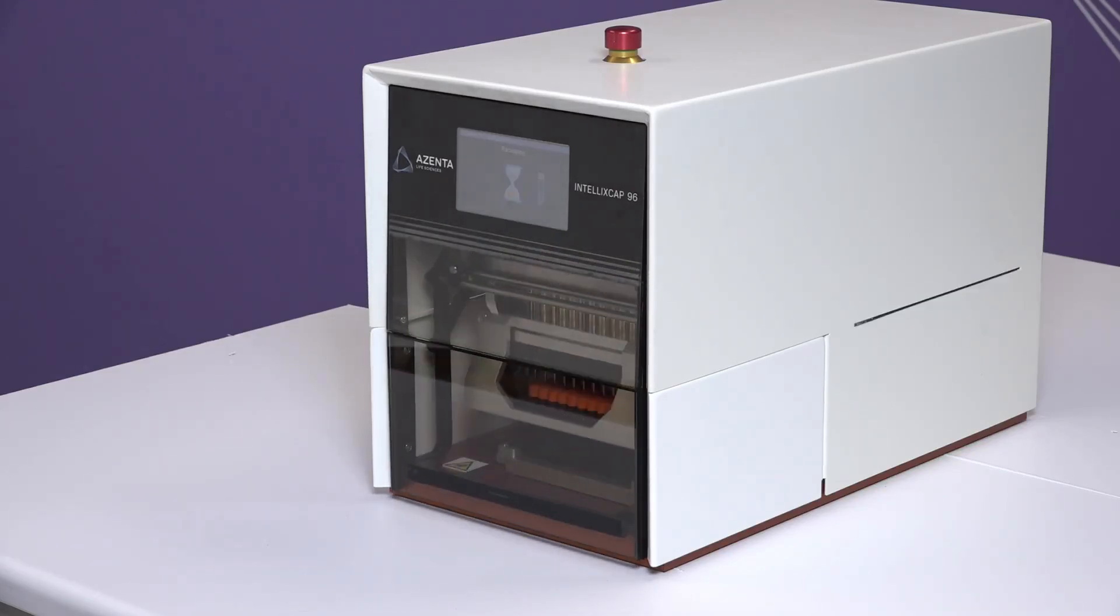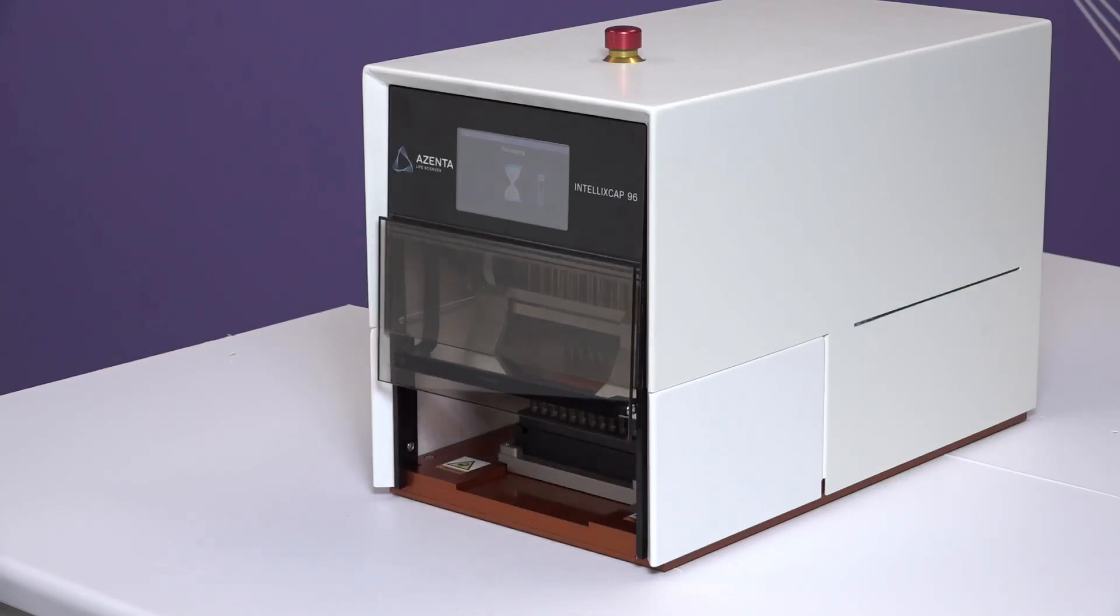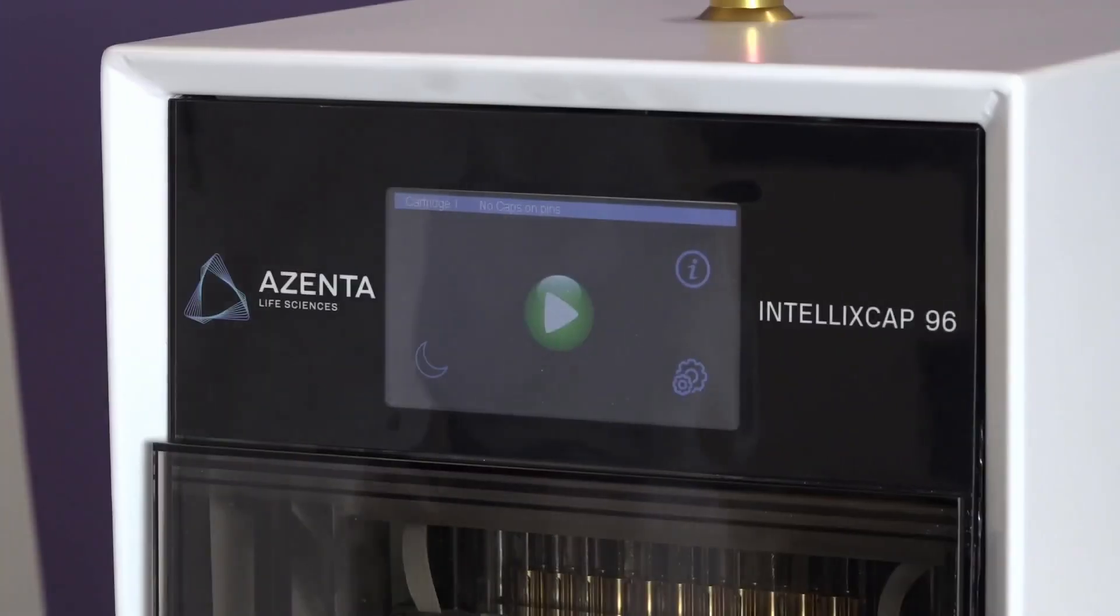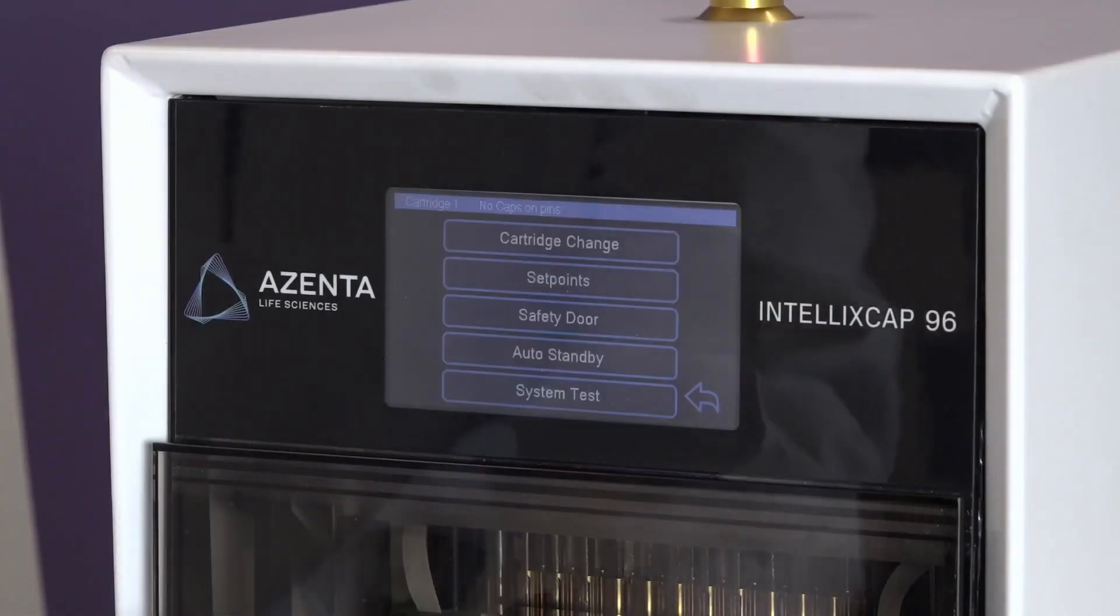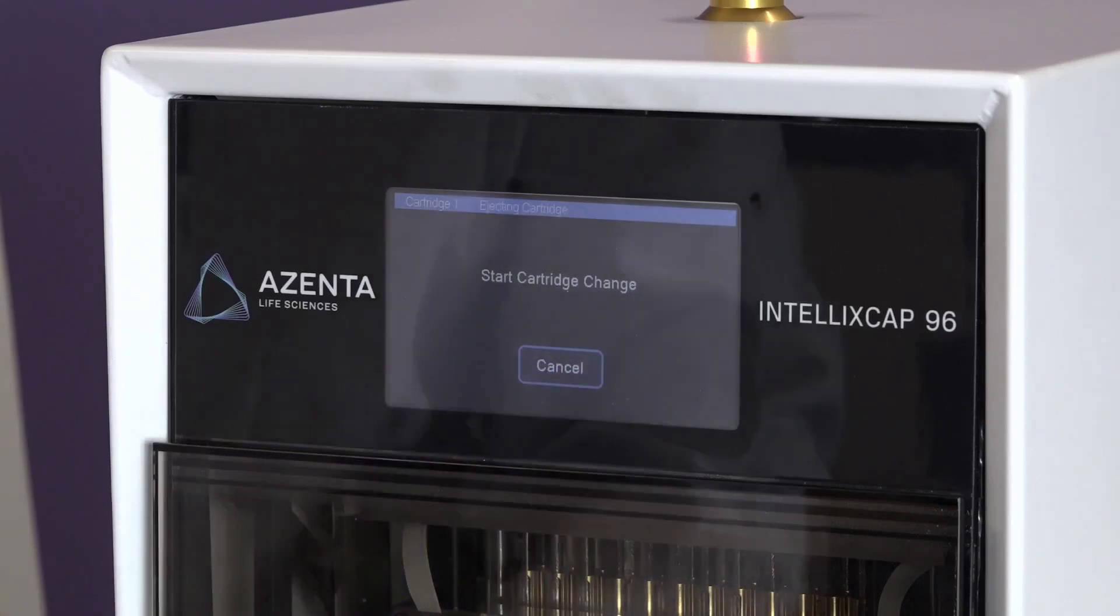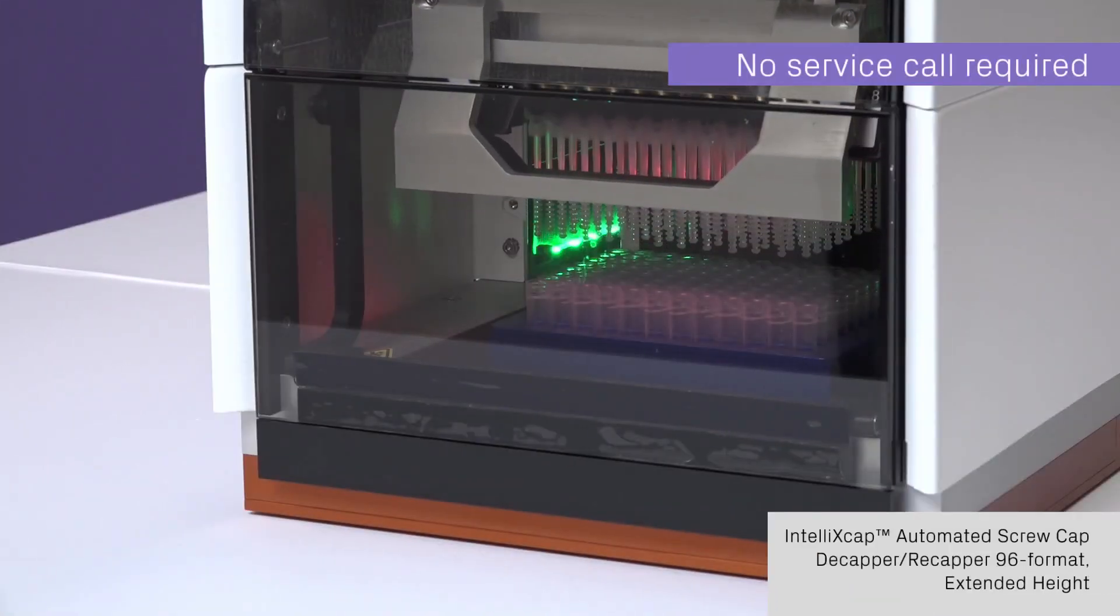With the right cartridge in place, the IntelliXcap can accommodate any automation-friendly Azenta sample tube in the compatible format, plus a wide variety of other tubes on the market. And switching between tube types couldn't be simpler. Using the touch panel, you can replace one cartridge with another in under two minutes, and it doesn't require a service call.